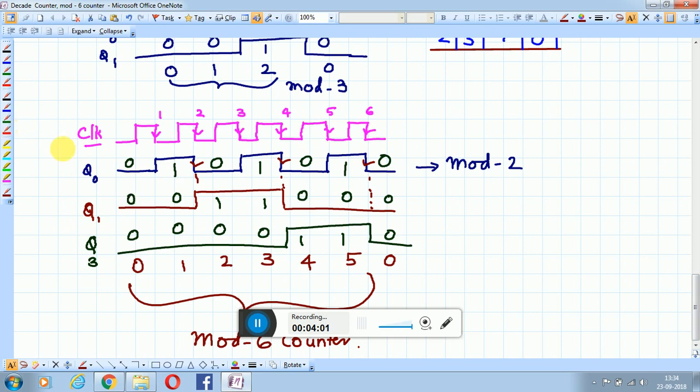You require 3 flip-flops: 1 for mod-2 and 2 for mod-3. Likewise, you can construct mod-18. Mod-6 multiplied by mod-3 becomes mod-18, which means mod-2, mod-3, and another mod-3. If you cascade two mod-3 counters, it becomes mod-9. Mod-8 uses 3 flip-flops; adding one mod-3 gives mod-24.